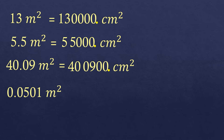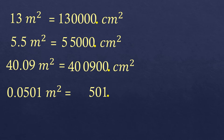The fourth example: 0.0501 square meters. We move the decimal point four times to the right — one, two, three, four. As you can see, there are now two zeros on the left side and the number becomes a whole number: 501. Those leading zeros are non-significant — removing them does not change the value. So 0.0501 square meters is equivalent to 501 square centimeters.